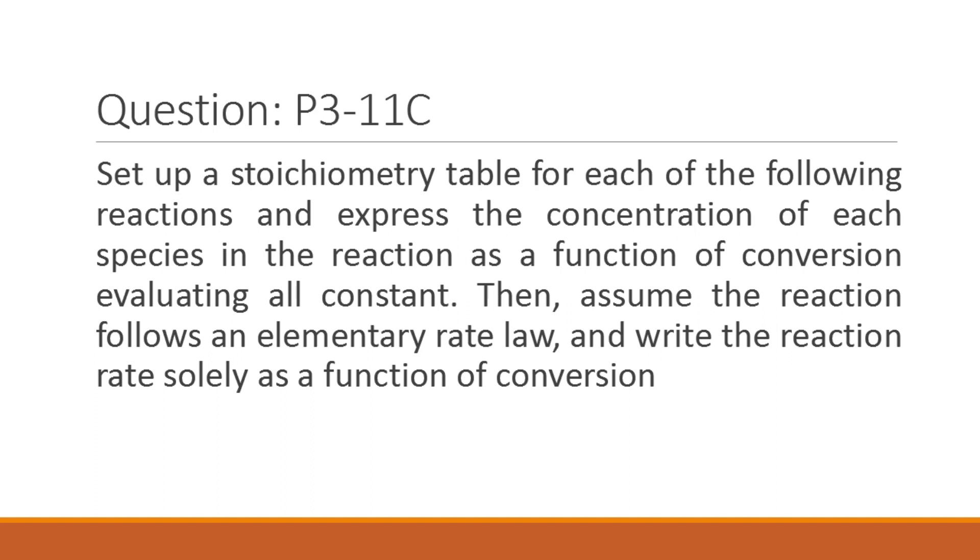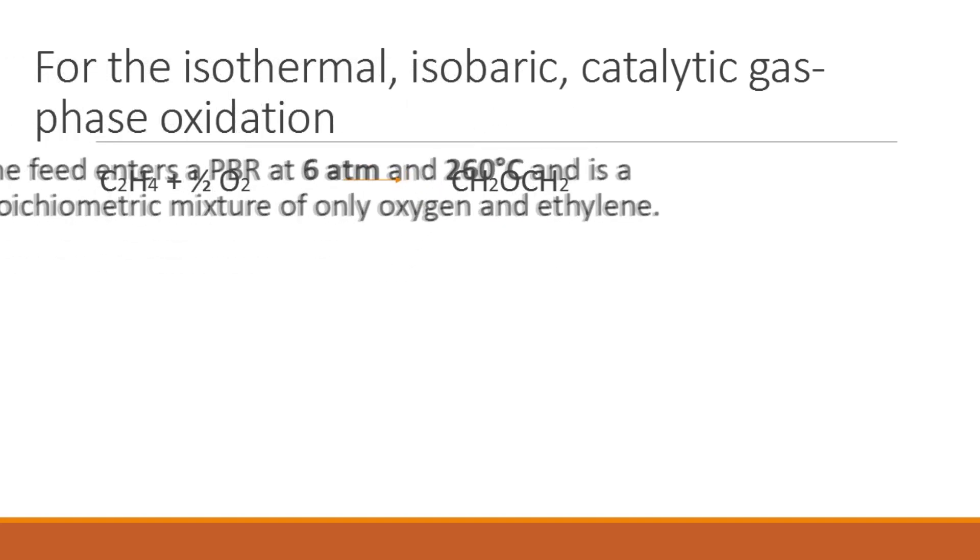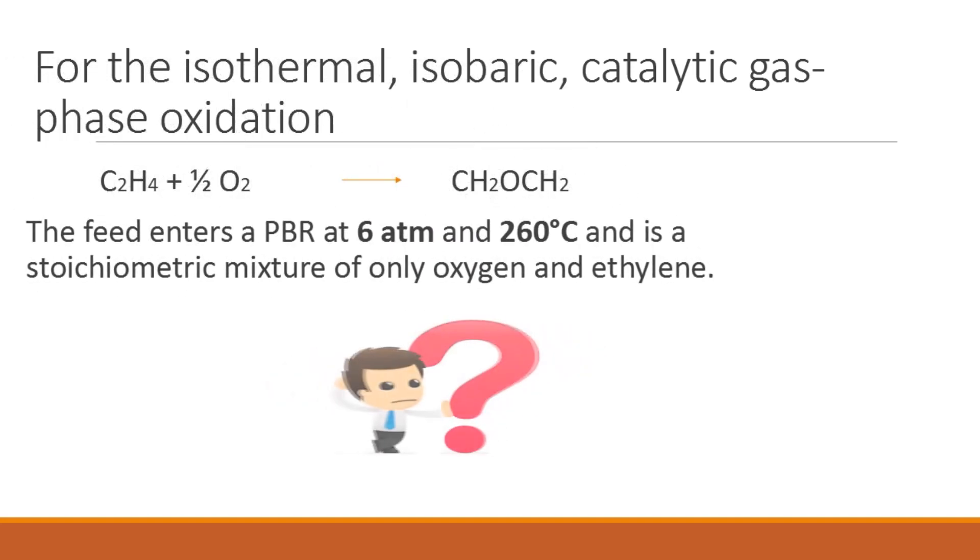This is the problem of chemical reaction that we are going to solve in this video. For the isothermal, isobaric, catalytic gas-phase oxidation, the reaction involving ethylene with oxygen to produce CH2OCH2, the feed enters a packed bed reactor known as PBR at 6 atmospheres and 260 degrees Celsius and is a stoichiometric mixture of only oxygen and ethylene.